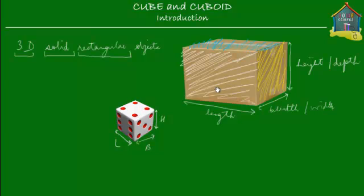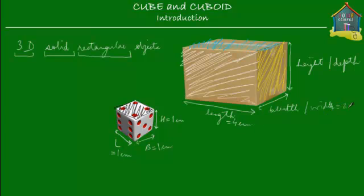This is called a cube because the length, the breadth, and the height of this object are equal to each other. The length equals the breadth, which equals the height. For example, if the length of this cube was one centimeter, then the breadth would also be one centimeter, and the height as well would be one centimeter. So all the faces of this cube are squares. Each face is a square. While in a cuboid, the faces are rectangular — if the length is say four centimeters, then maybe the breadth or width is two centimeters, and maybe the height is three centimeters. So the length is different from the breadth and it's different from the height. So this is a cuboid.